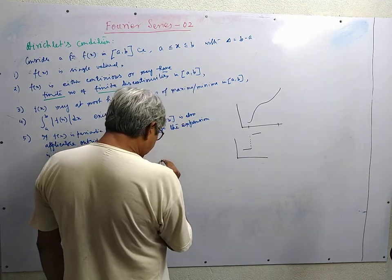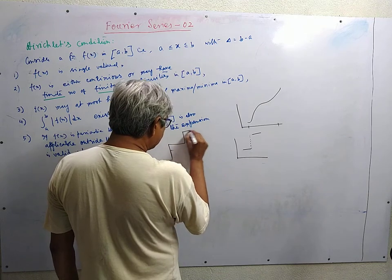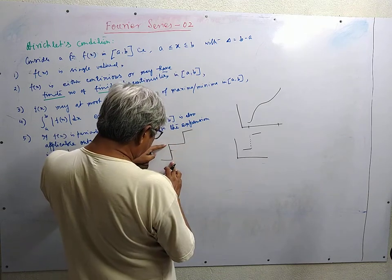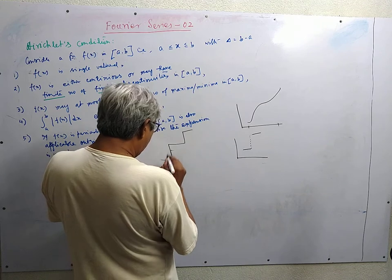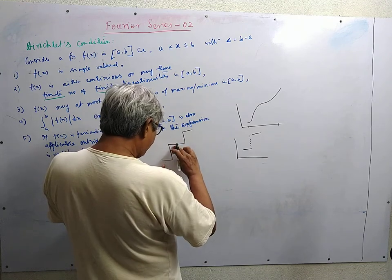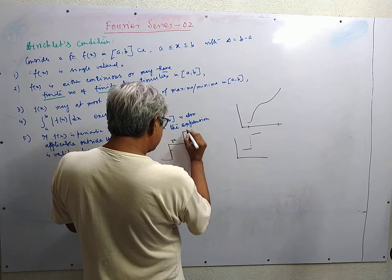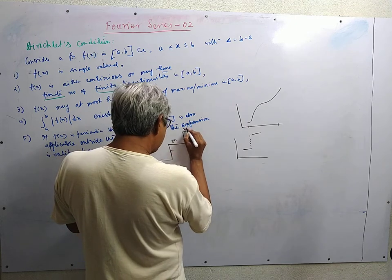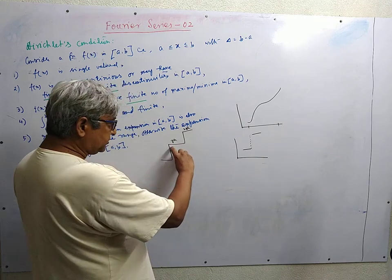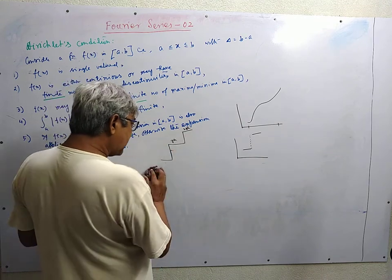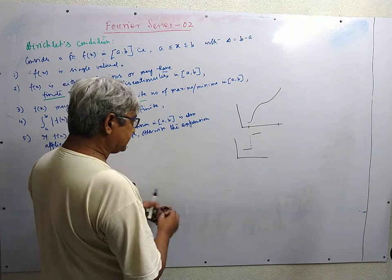If we consider a staircase and consider the potential along the staircase, the potential is v0 here. If this height is h, then it is gh, twice gh, and so on. So the amount of discontinuity is gh. Such discontinuities are called finite discontinuities.